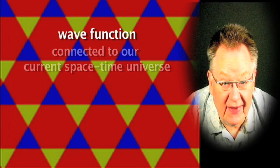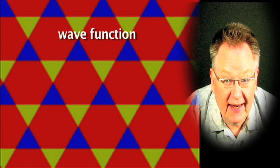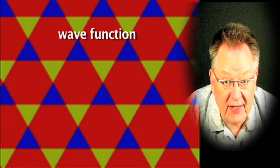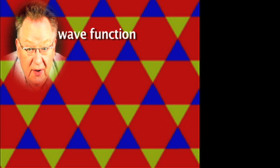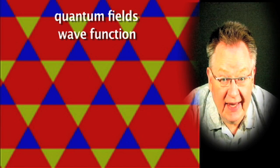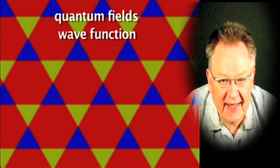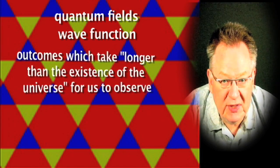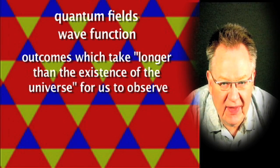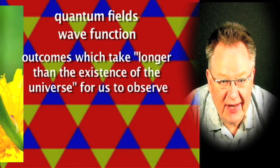Seeing 6th Dimensionally, on the other hand, would be seeing all the possible versions of the universe you're within, including the versions that are not causally connected — like the one where you pop out of existence here and reappear on the moon, or the one where it's 2010 and Michael Jackson is still alive. The 6th Dimension is the complete quantum field for our unique universe, including those outcomes which we acknowledge must exist as possible versions, but which would take longer than the existence of the universe for us to observe. Can any living creatures see 6th Dimensionally?